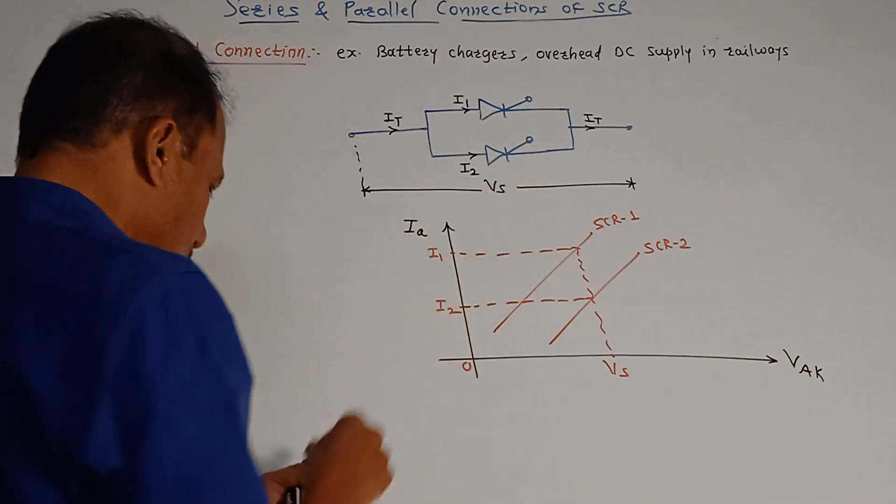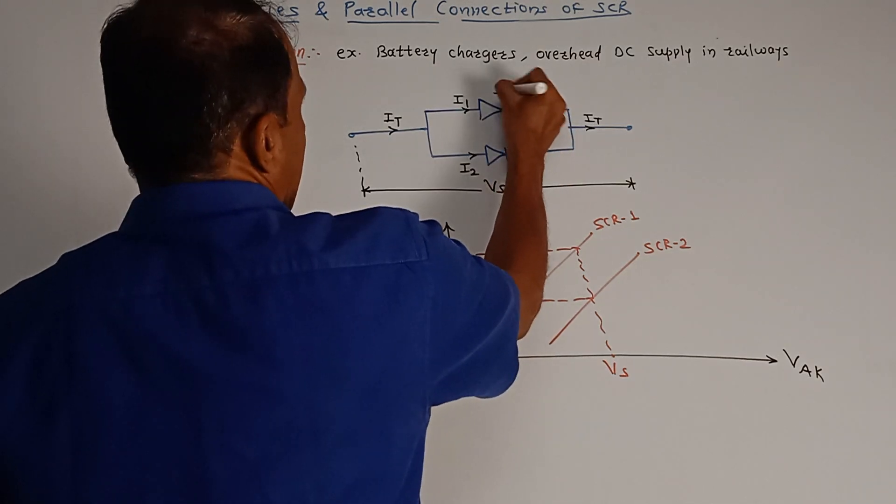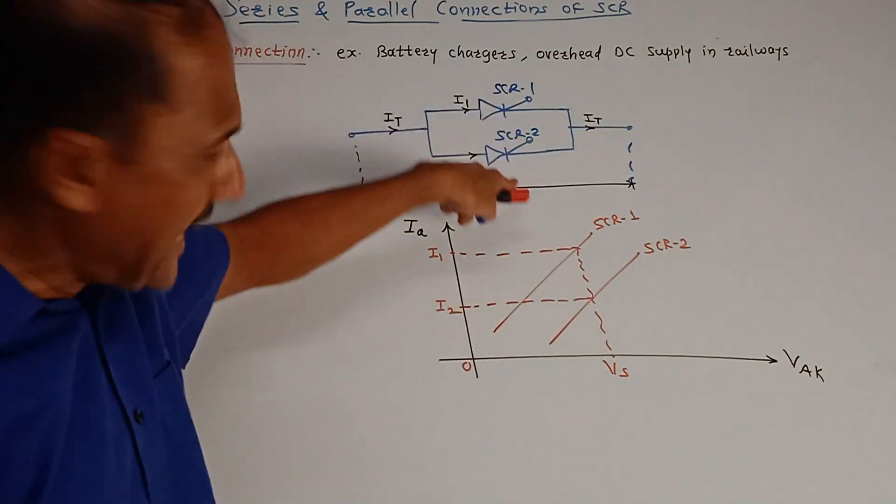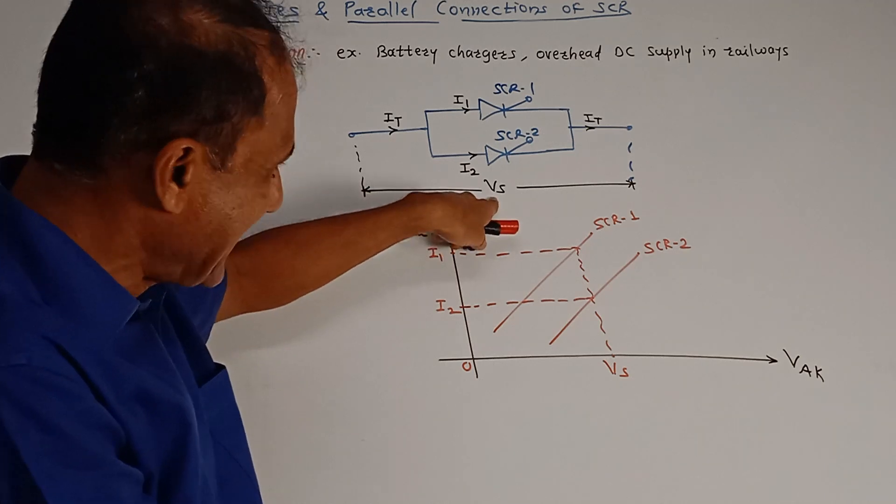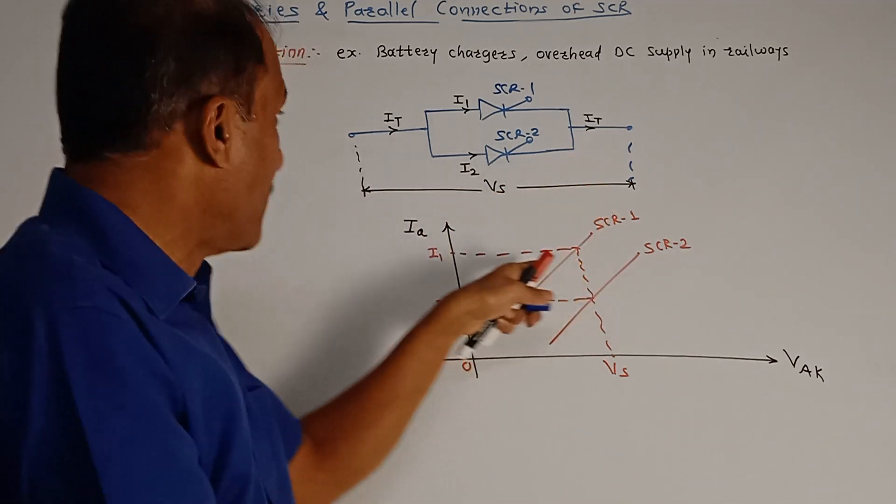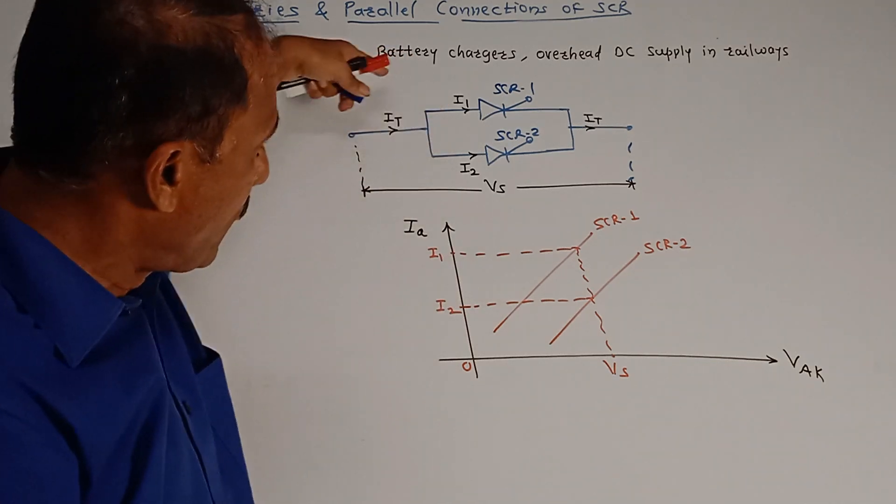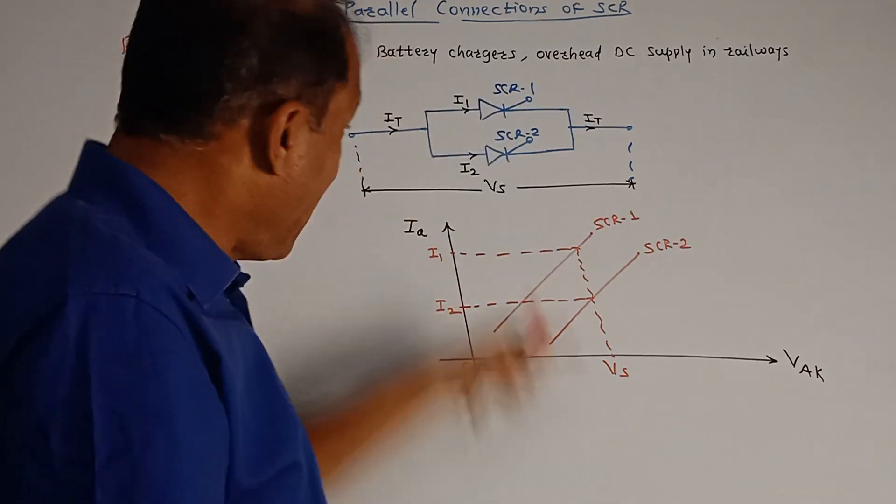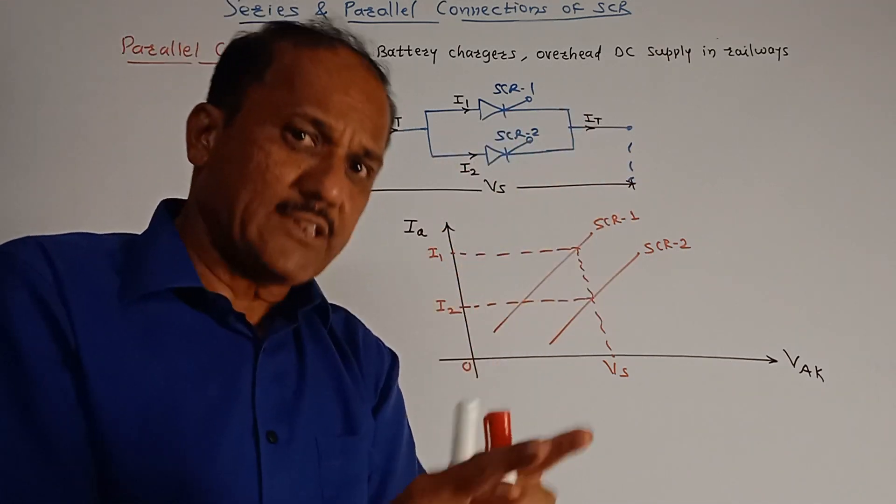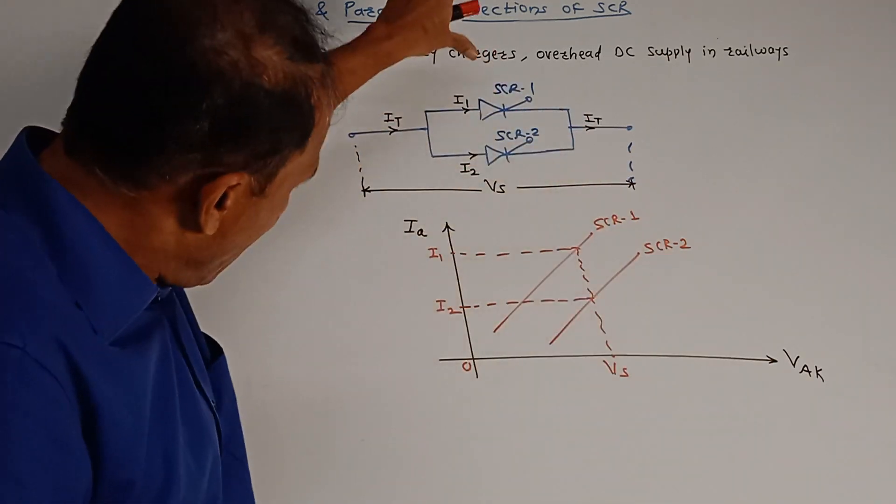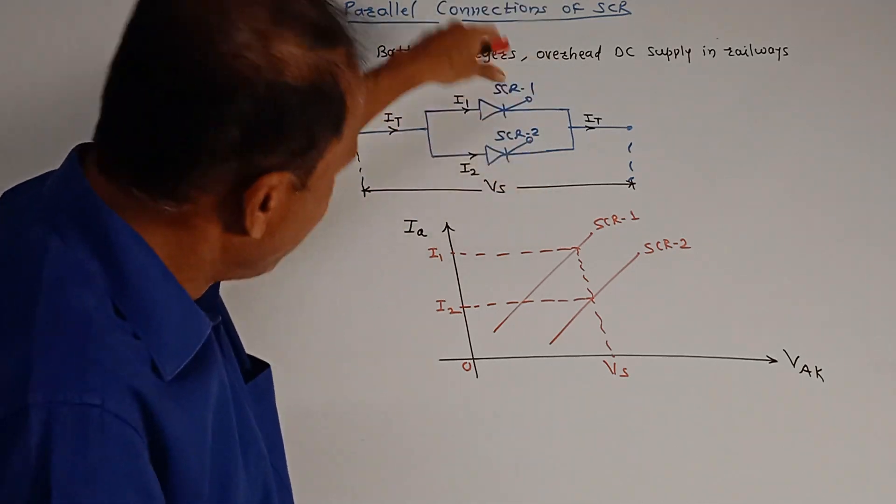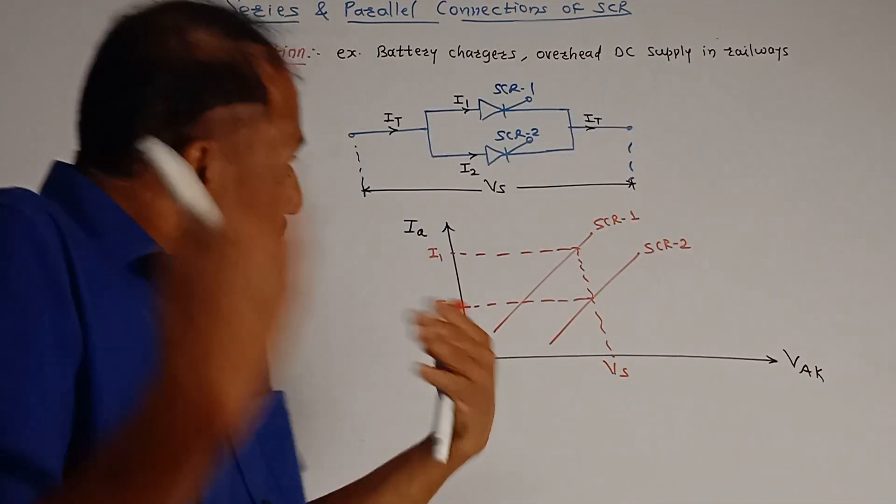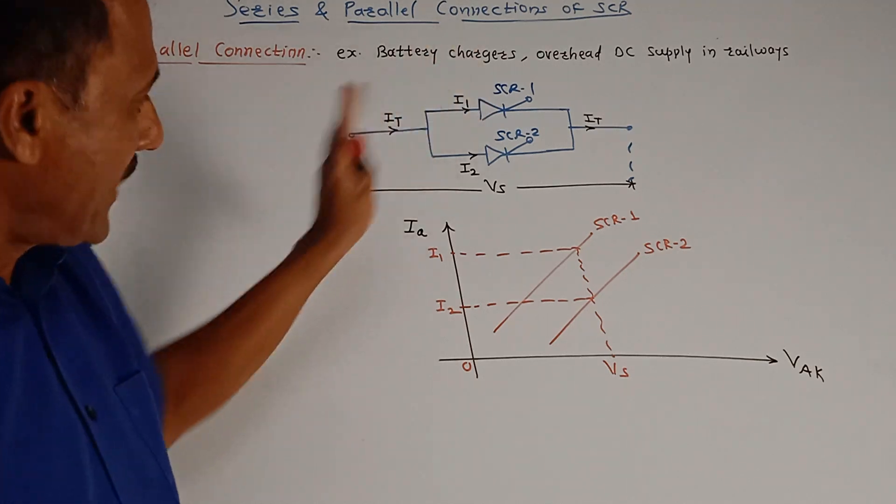I1 is current flowing through SCR 1 and I2 through SCR 2. These currents get added and it produces a large current I. So if you are connecting all such SCRs in parallel, then all the currents get added. And finally, you are getting a total output current which is much more greater than the individual current flowing through the SCR.